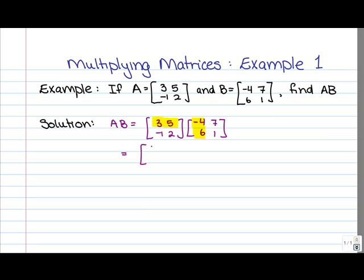So in other words, what we're going to have is 3 times -4 plus 5 times 6. So again, we've multiplied entry (1,1) in matrix A by entry (1,1) in matrix B, and then we've added to that entry (1,2) in matrix A times entry (2,1) in matrix B.